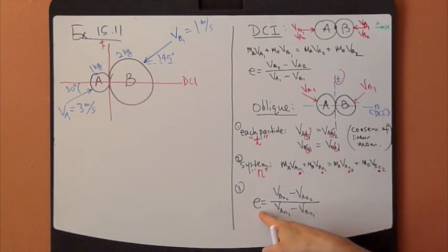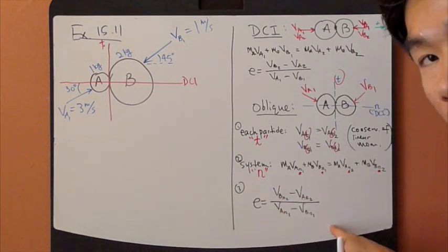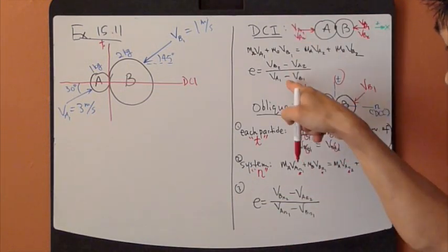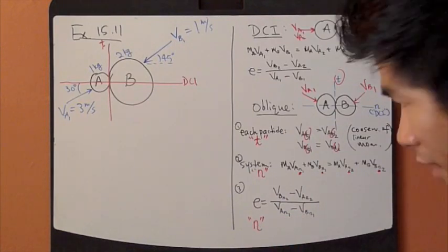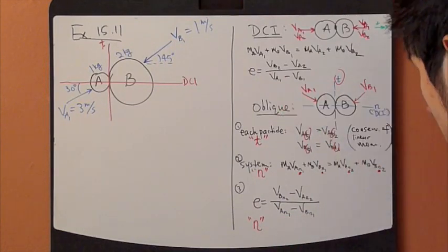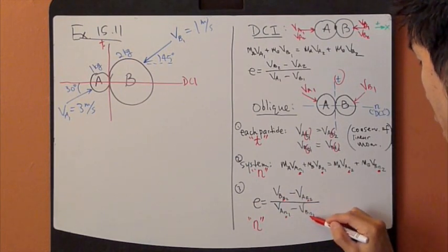Finally, for the coefficient of restitution, the same definition as before for direct central impact, except you apply it to the N direction as well, which is the DCI impact direction. So N, N, N, and N.